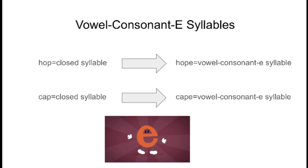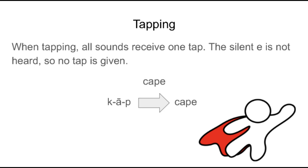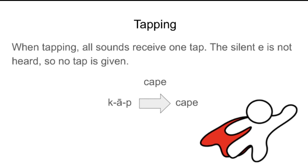The silent e makes all the difference. When tapping vowel consonant e words, all sounds receive one tap. The silent e is not heard, so that letter does not receive a tap. So in the word 'cape,' we have three sounds, so three taps are given. Cape would sound like this: C - A - P - Cape.